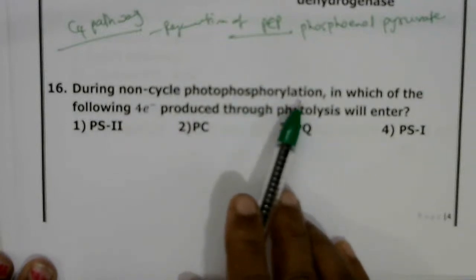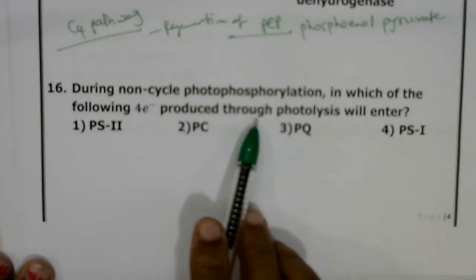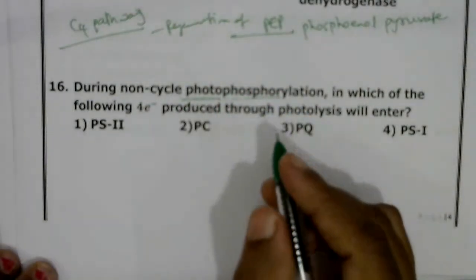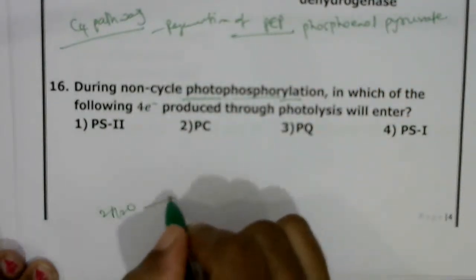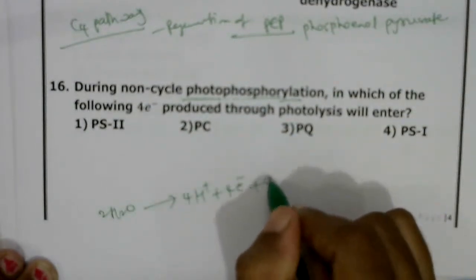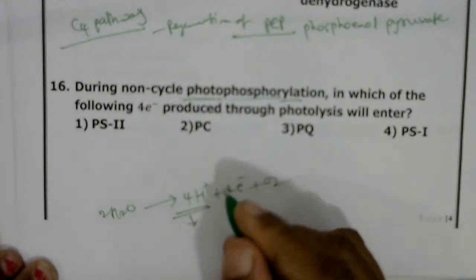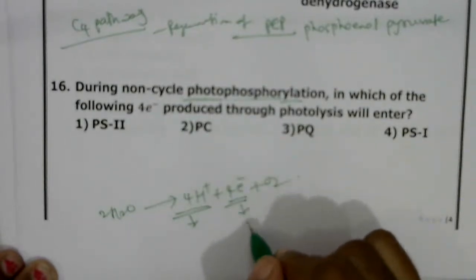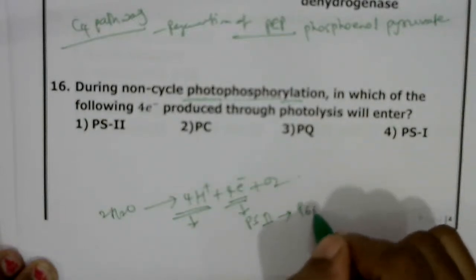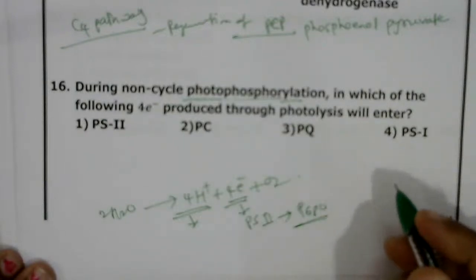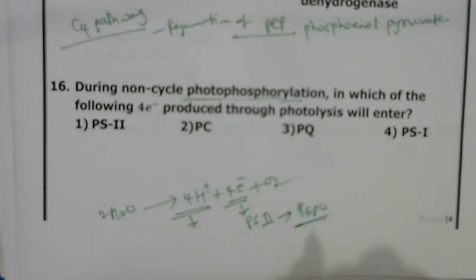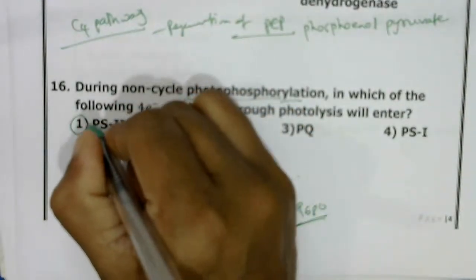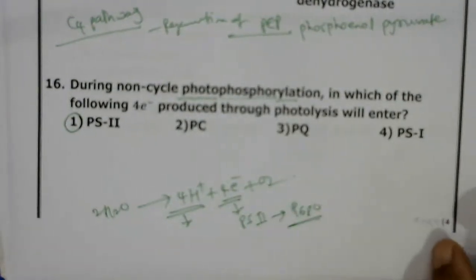During non-cyclic photophosphorylation, where do the four electrons produced through photolysis enter? Two molecules of water are broken down into four protons, four electrons, and O2. The four protons accumulate in the stroma. The four electrons pass to PS2 — specifically the reaction center P680. From P680, they are transferred through intermediate electron carriers to reduce NADPH2. Correct answer: PS2 (P680).